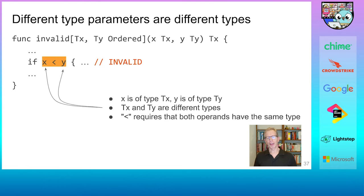Note that this code even remains invalid if we instantiate the function invalid with two identical types. Because to type check the function body, the compiler only considers the function itself, not the instantiations. Because in general, it cannot know where that instantiation is coming from.